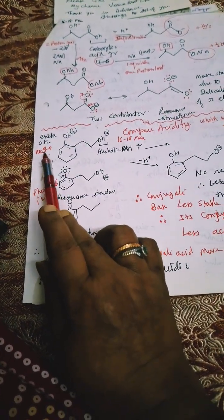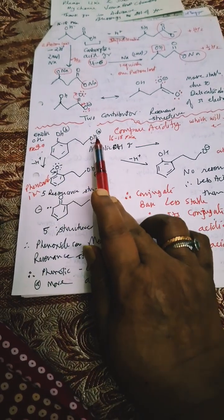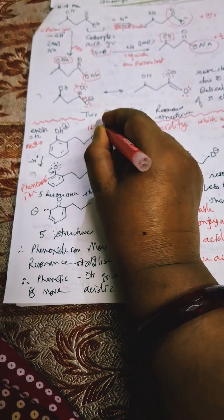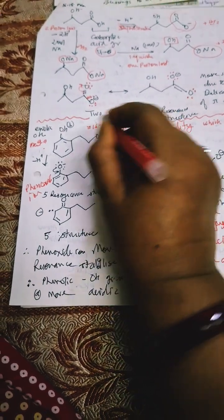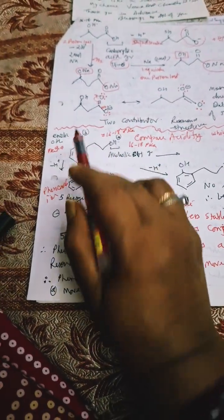Phenolic group, we know, is approximately 10, 9.9 pKa, and this alcoholic group is having 16 to 18 approximately pKa. So which is having lower value will be more acidic. So this is more acidic.